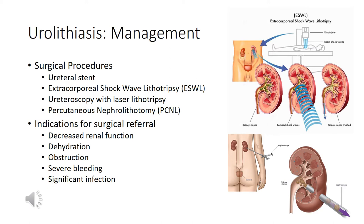Percutaneous nephrolithotomy (PCNL) involves accessing the kidney directly through a nephrostomy tube placed by an interventional radiologist, then the urologist suctions out the stones. This is the most invasive treatment and is reserved for stones greater than one centimeter — typically 1.5 centimeters and above — and staghorn stones. All procedures including ureteral stent placement are done under general anesthesia. Indications for surgical referral include abnormal renal function, concerns for obstruction or sepsis, and significant infection.